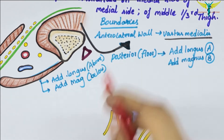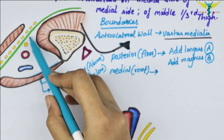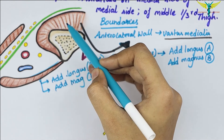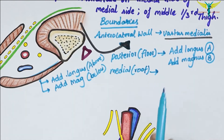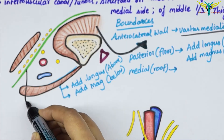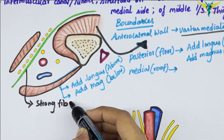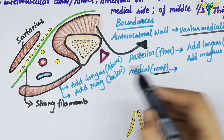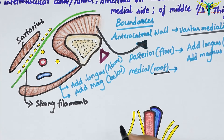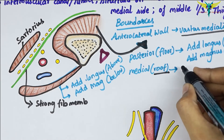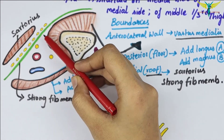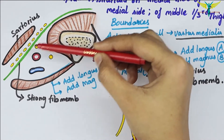The medial wall or roof of the adductor canal is formed by a strong fibrous membrane stretching across the anterolateral and posterior boundaries, and this roof is overlapped by the sartorius muscle. Because the roof is formed by the sartorius muscle, the adductor canal is named the subsartorial canal. The subsartorial plexus of nerves lies on this roof, below the sartorius muscle.